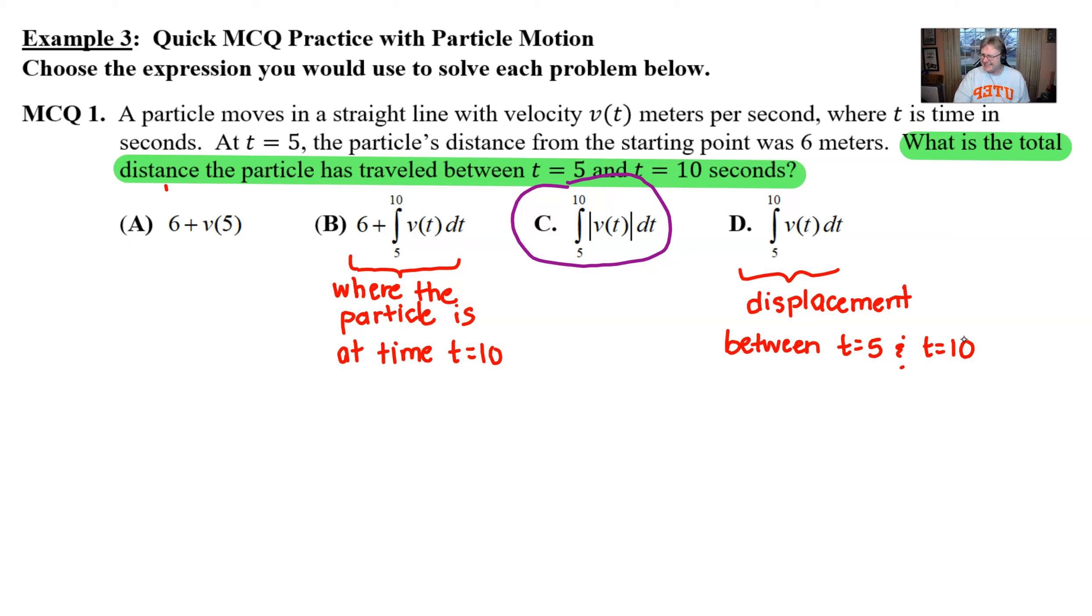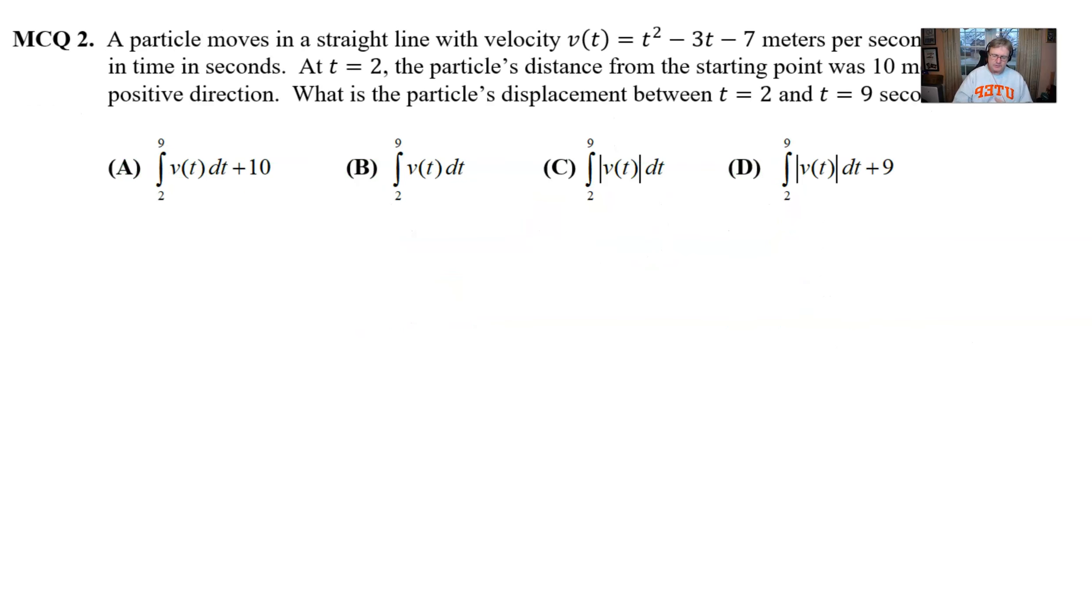Now, choice a is a little peculiar. I don't even know really how to interpret this so much except to say it's the particle's velocity at time 5 added to 6, which obviously is not anything close to what we were trying to find. Hopefully that makes sense. Let's take a look at the second multiple choice question.